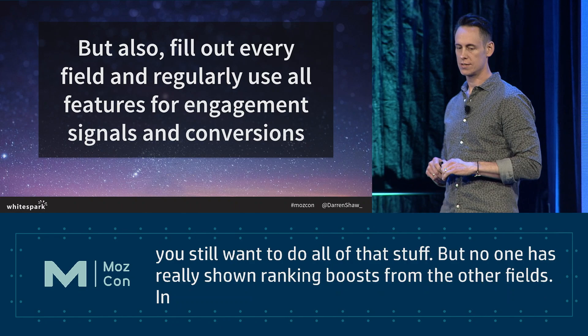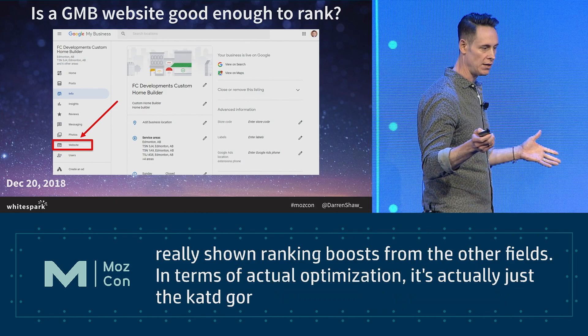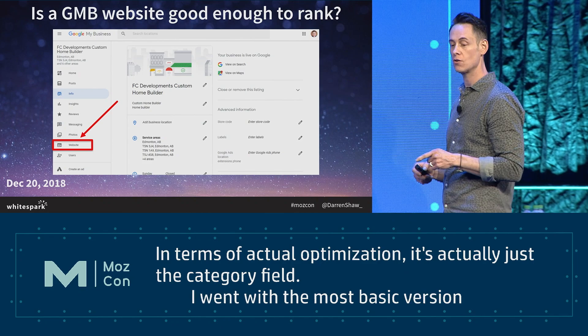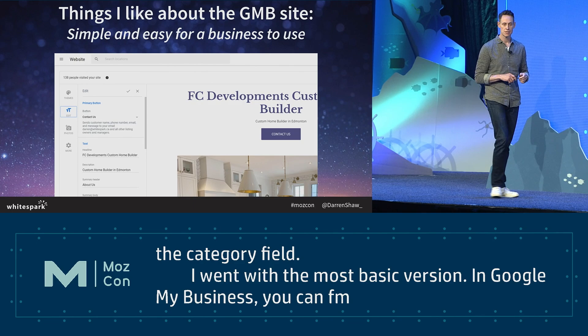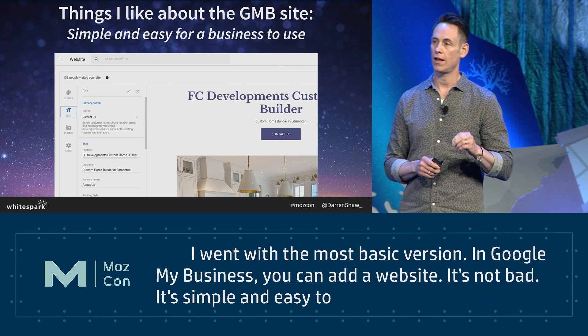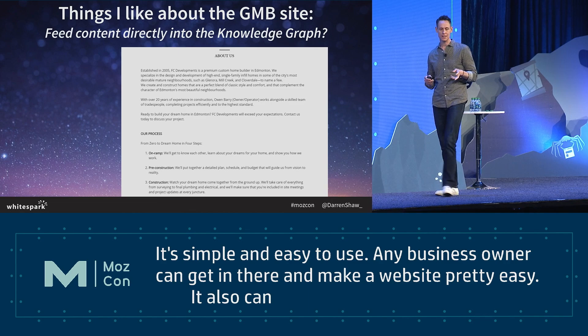I wanted to give them a website, so I went with the most basic version - in Google My Business you can actually add a website using their little website builder. It's pretty decent, looks fine for any small business, simple and easy to use. Any business owner can get in there and make a website pretty easily. It also can feed content directly into the knowledge graph, since you're saving your website directly into Google's database.